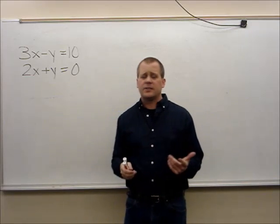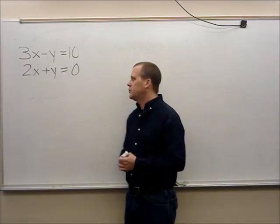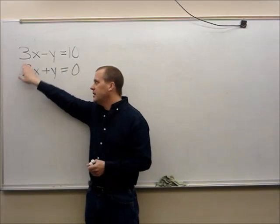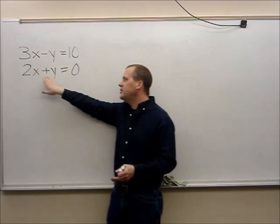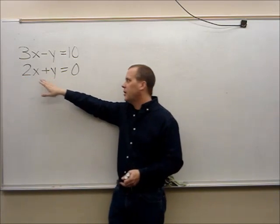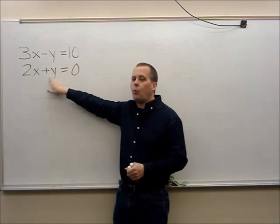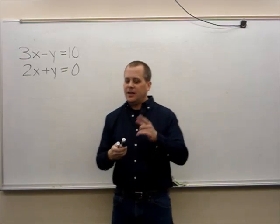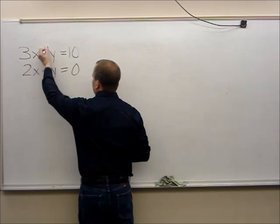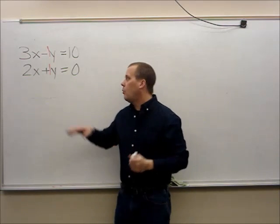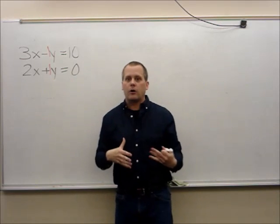The elimination process is very simple. All you've got to do is ask yourself a couple of questions. Here's the first question: are the numbers in front of x exactly the same? And if you answer no to that, then you go to your y value. 3 and 2 are not the same, so I'm going to go over to my y value. Are the numbers in front of y exactly the same? Keep in mind there's always that little invisible number of 1. The number in front of y is 1, and the number in front of this y is also 1 — so yes, they are the same.